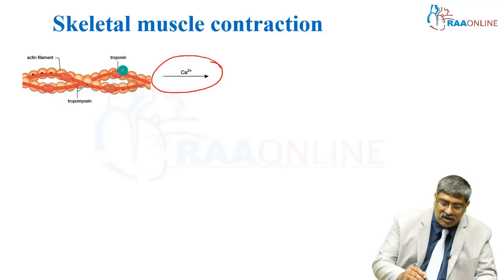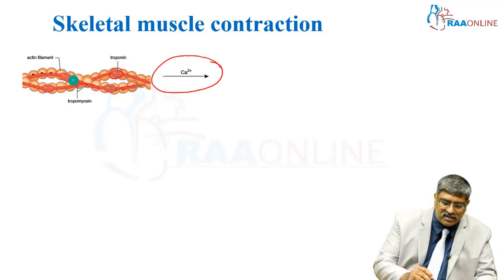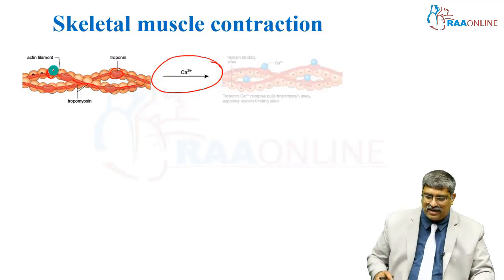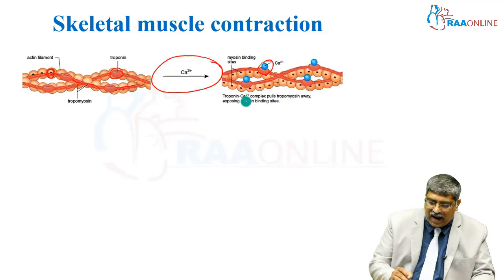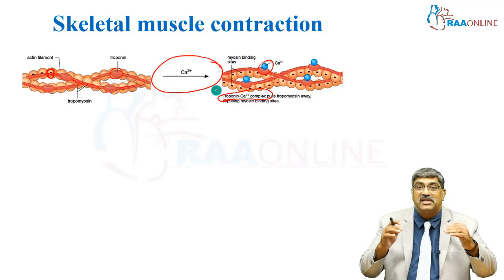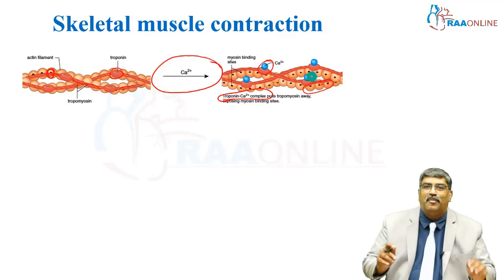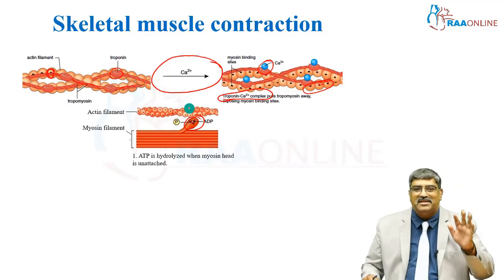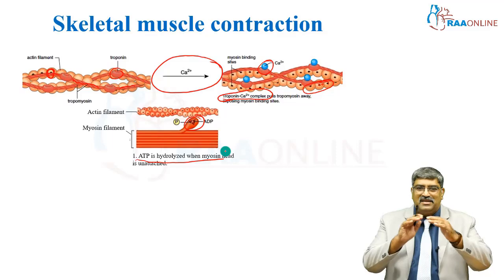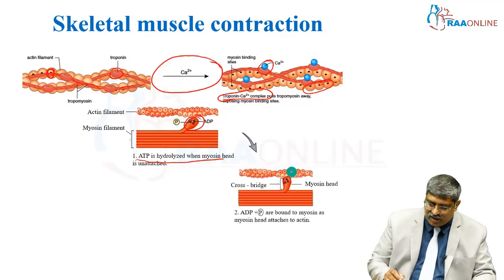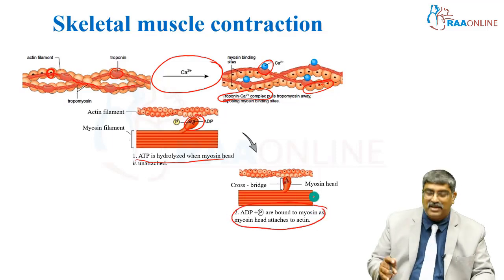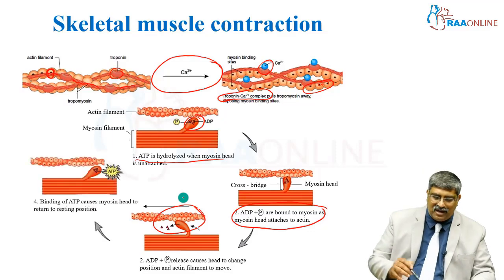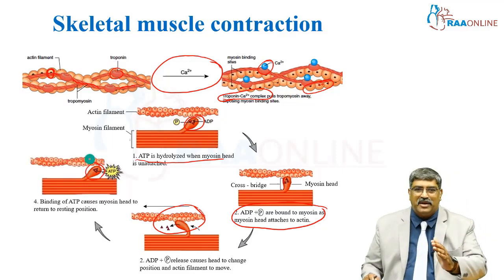How does calcium induce muscle contraction? You have troponin, and this part is the troponin which covers the myosin binding site in the actin. When calcium is released, it binds with troponin, and this troponin-calcium complex causes a conformational change in tropomyosin, exposing the myosin binding sites. Once the myosin binding sites are exposed, ATP is hydrolyzed when the myosin head is unattached to the actin. Then the myosin binding site is exposed, the myosin head attaches to the actin, contraction happens, and finally the myosin head returns to its normal position when ATP binds to myosin.